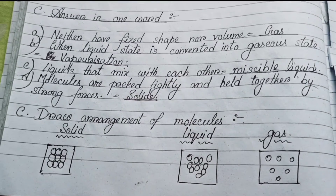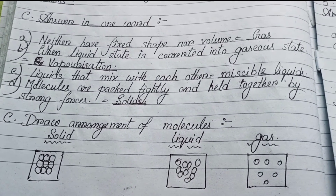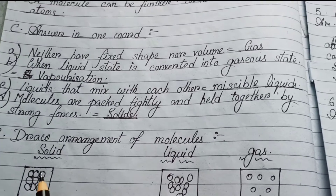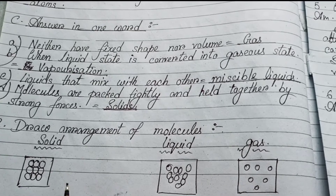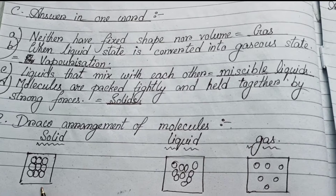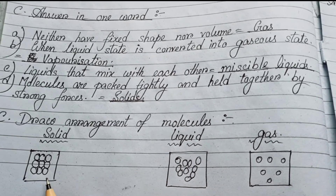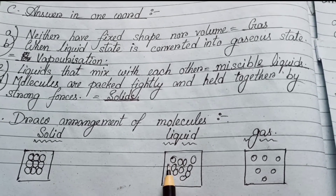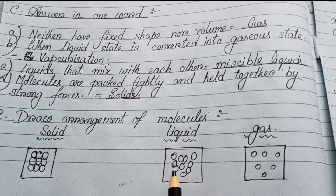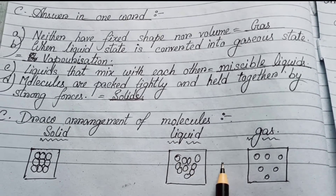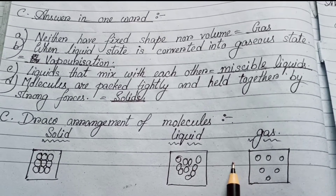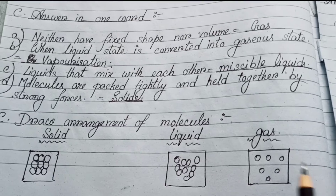Next, Part C — Draw the arrangements of molecules for solid, liquid, and gas. In solids, the molecules are packed tightly with less space between them. In liquids, the force of attraction is not very strong and there is some space between the molecules. In gases, molecules are loosely packed with lots of empty space between them.